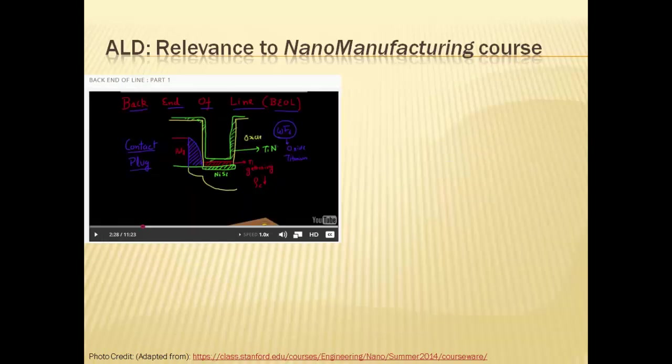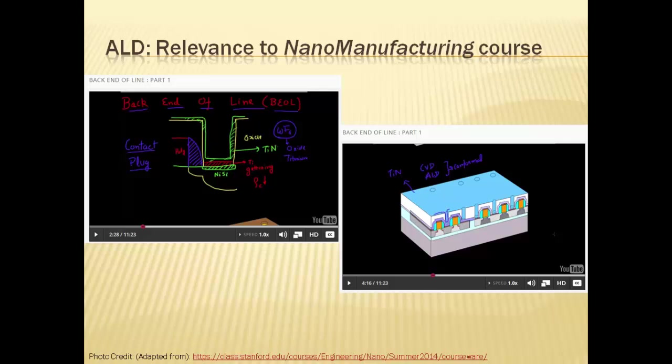Towards the back end of the line, we would require a titanium nitride thin layer deposition conformally around the silicon oxide to act as a barrier between the oxide and the tungsten layer to be deposited thereafter. This picture is a 3D cartoon depicting the same. The blue layer on top and within the trenches is titanium nitride, all which looks so familiar after our discussion on ALD deposition so far.